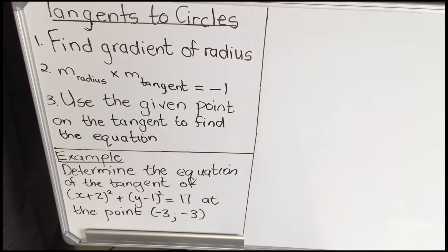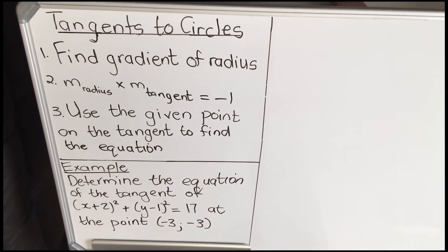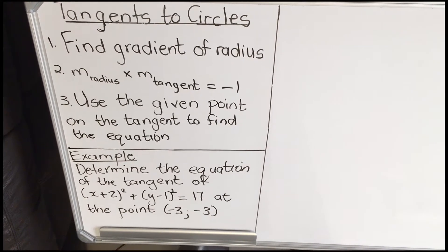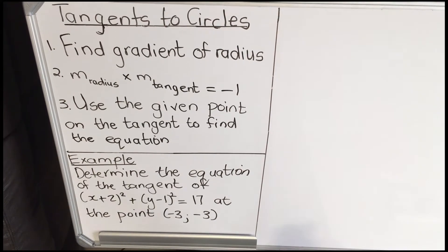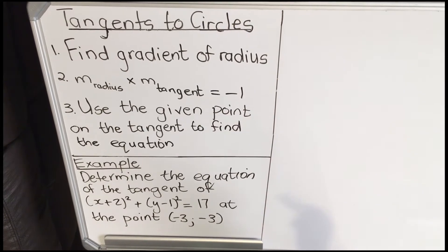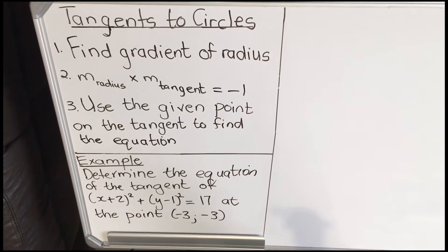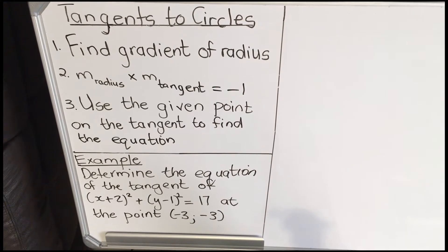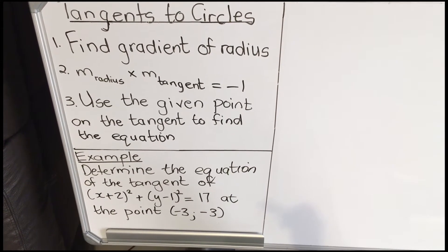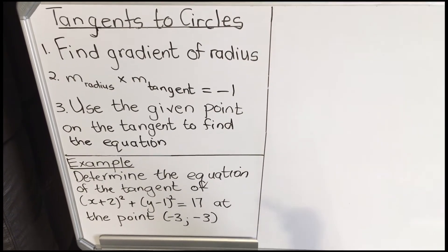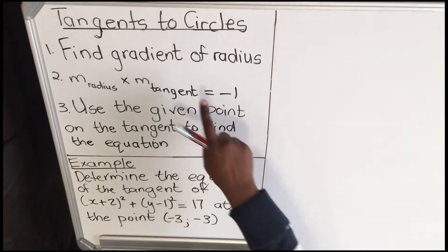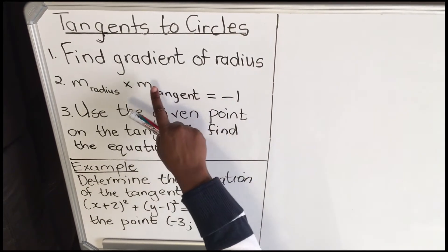Hello Grade 12s. This is a lesson on a tangent in a sector — how you find the equation of the tangent for a circle. It's based on the theory you were taught in Grade 11: a tangent is perpendicular to the radius. So if you have a circle, one of the theorems in Euclidean geometry is that when you have a tangent, the tangent is perpendicular to the radius. So the first thing you're going to do is find the gradient of the radius.